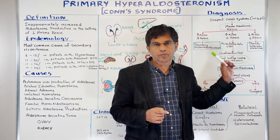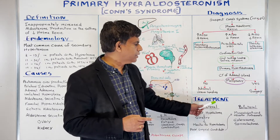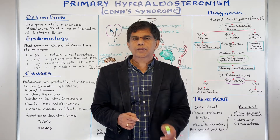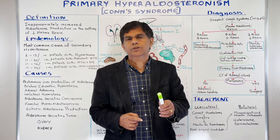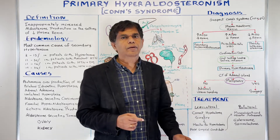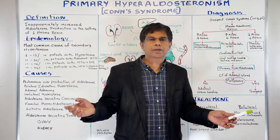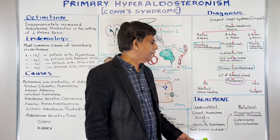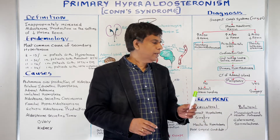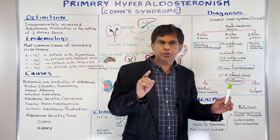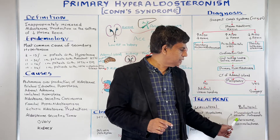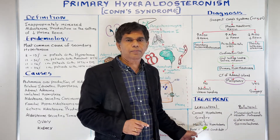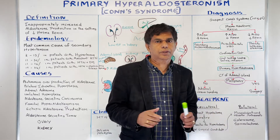Treatment depends on whether it is unilateral or bilateral. For unilateral disease, first correct the potassium, then proceed with surgery — and ensure the patient doesn't become hyperkalemic post-operatively. If the patient is a poor surgical candidate, use medical treatment instead. For bilateral hyperaldosteronism, there is no role for surgery. Give a mineralocorticoid receptor antagonist — eplerenone or spironolactone. This same medical treatment applies to non-surgical candidates with unilateral disease.